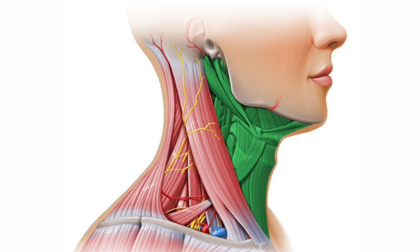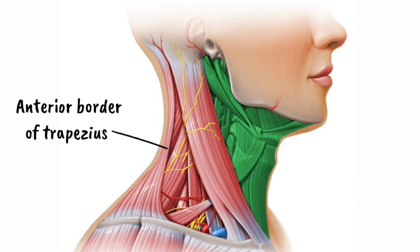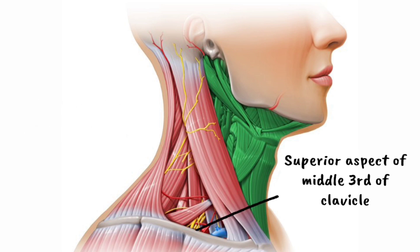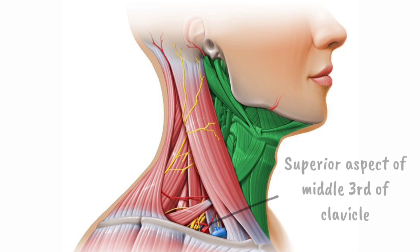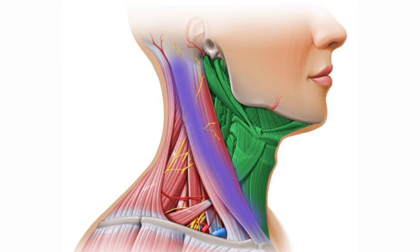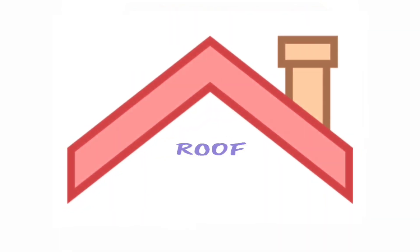The posterior boundary of this triangle is formed by the anterior border of the trapezius muscle. The base of the triangle is formed by the superior aspect of the middle third of the clavicle. The apex of the triangle is the meeting point of the sternocleidomastoid muscle and trapezius muscle at the superior nuchal line of the occipital bone.